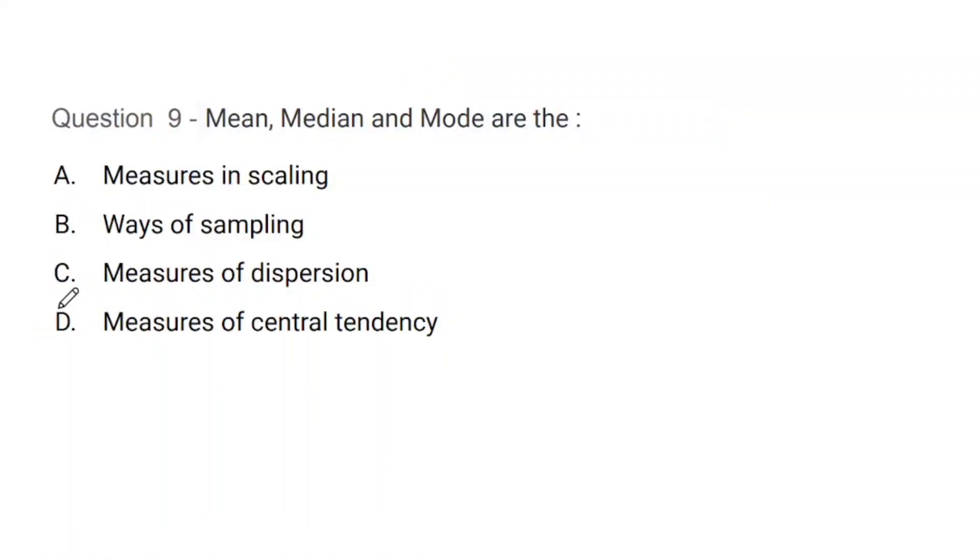Question number 9: Mean, median and mode are what - measures in scaling, ways of sampling, measures of dispersion, or measures of central tendency? If someone has read the syllabus properly, they will be able to do this question. The correct answer is D, of course, that is measures of central tendency.